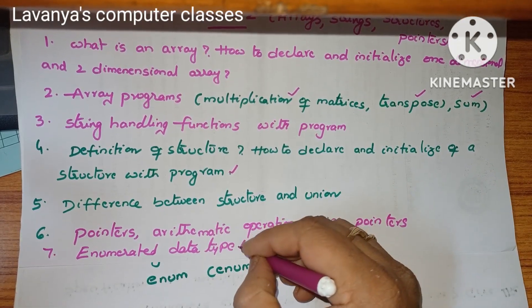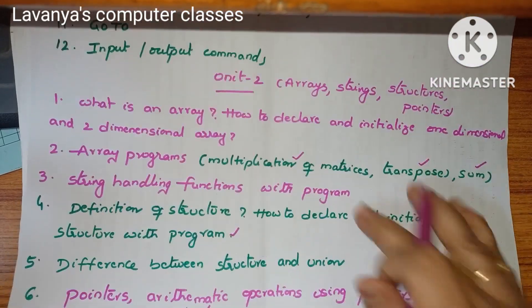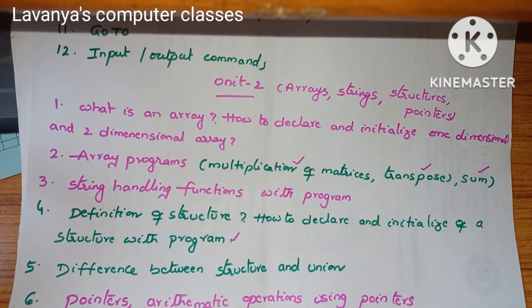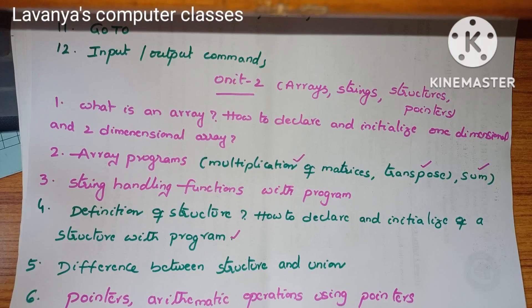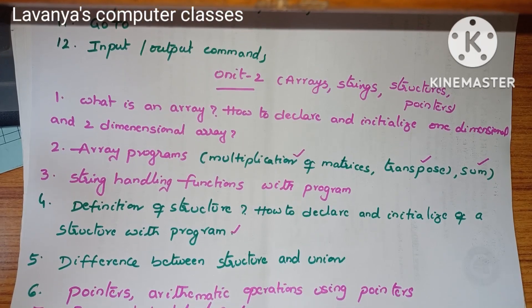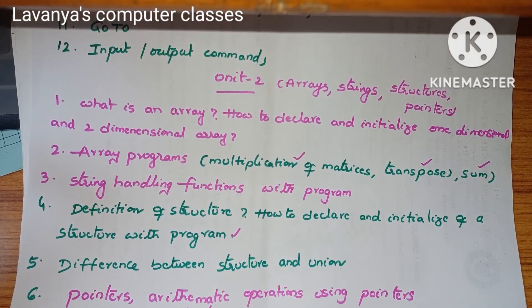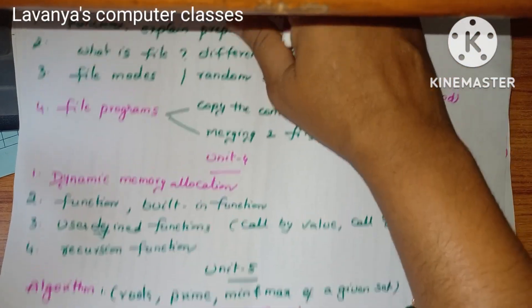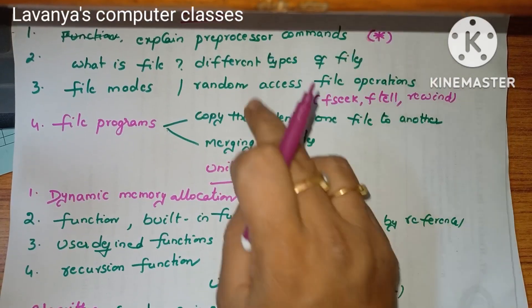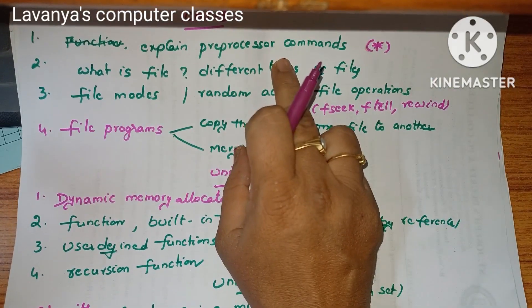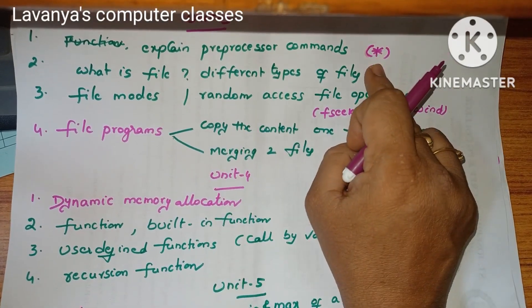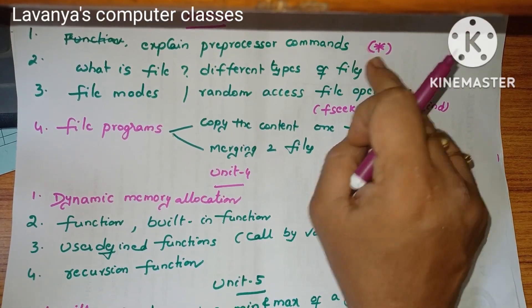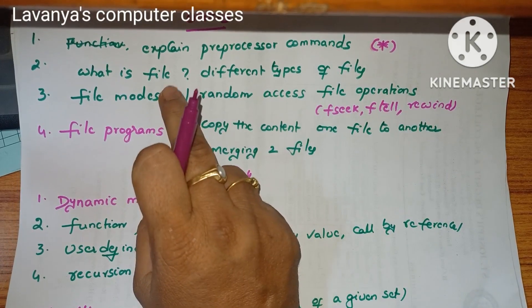A very very important question is the enumerated data type. These are the questions in unit 2. For unit 3, the very very important question is pre-processor commands.